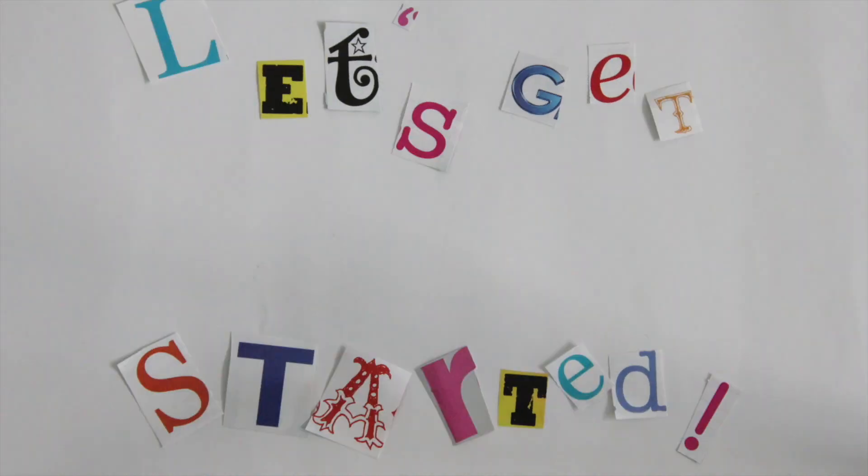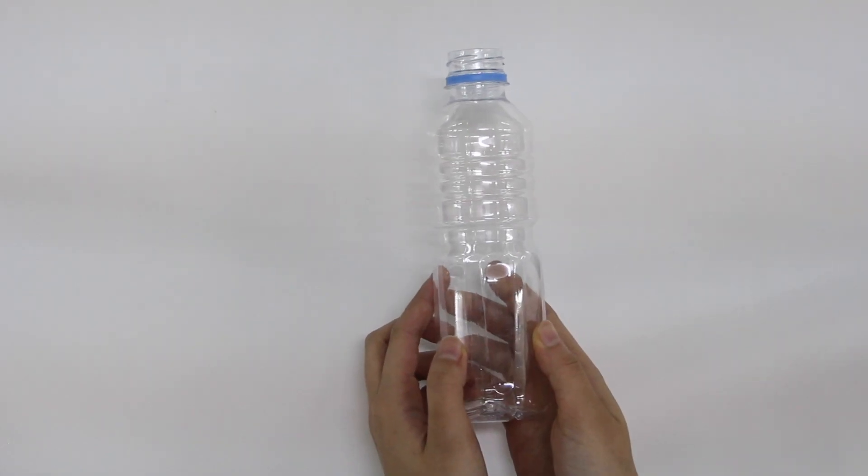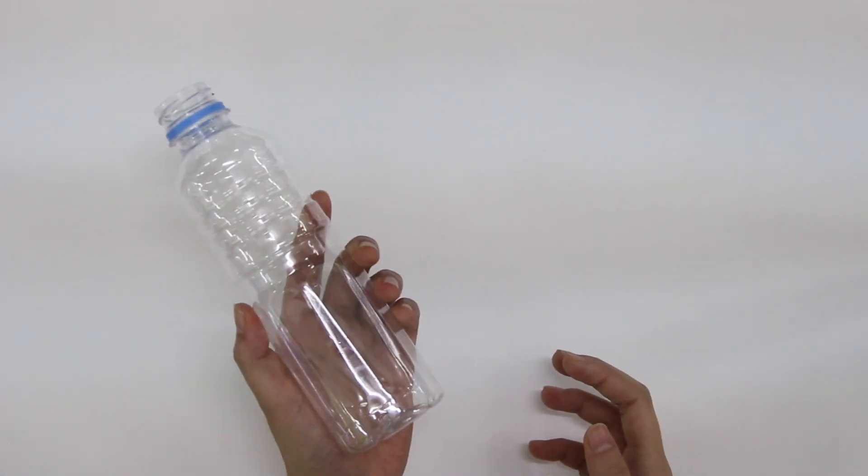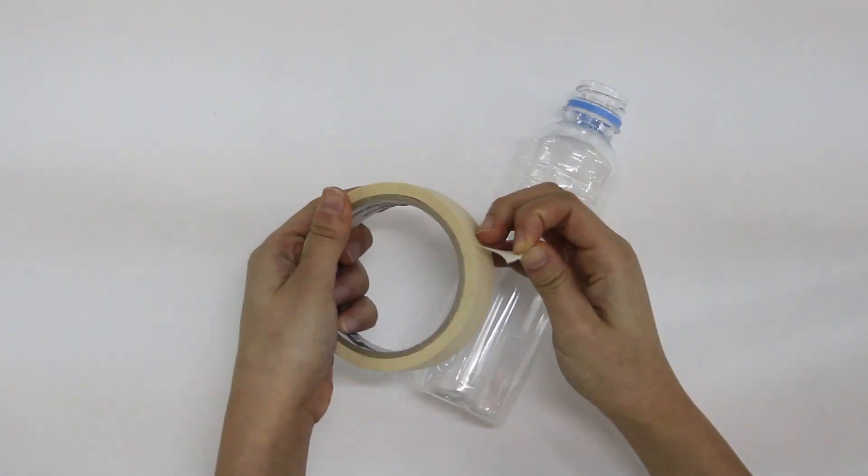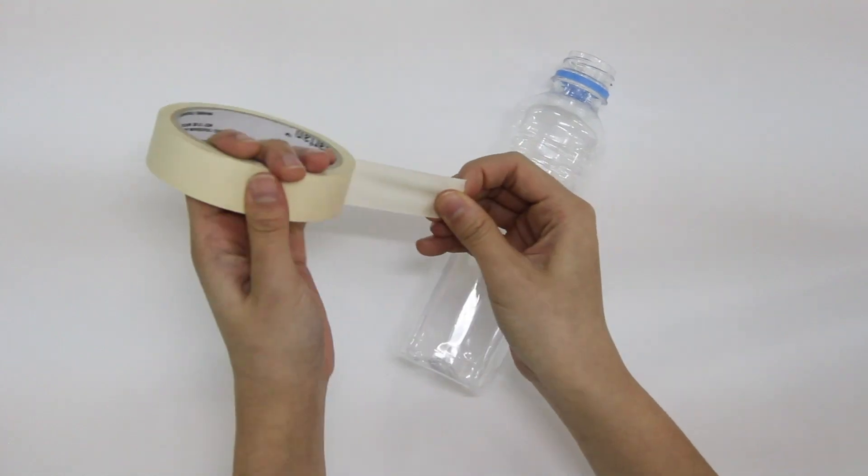Ding ding! We have to start! First, we have to mark the place where you want to cut the bottle. For this video, we will be using masking tape instead of permanent marker.